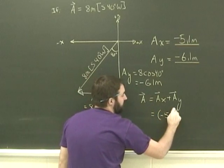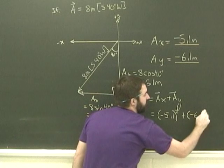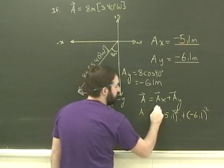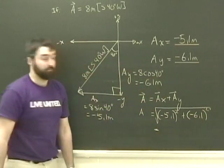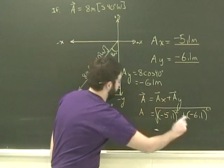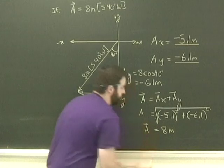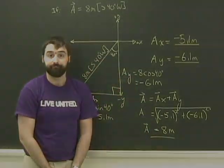Ax is negative 5.1 squared. Ay is negative 6.1 squared. And the magnitude of A will be the square root of all that stuff. When we do those square roots, we do indeed get 8 meters. So we know we've done everything properly.